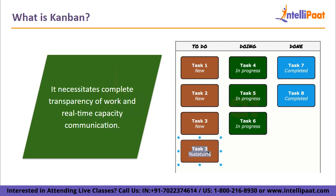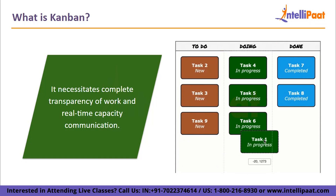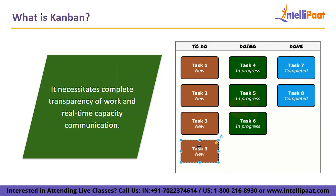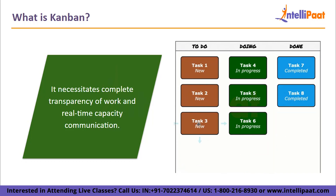The Product Owner is free to reprioritize work in the backlog without disturbing the team. The development team knows they are giving the business the greatest value possible as long as the Product Owner keeps the most crucial tasks at the top of the backlog. Therefore, the fixed-length iterations found in Scrum are not necessary. The individual differentiation is not always necessary when deciding between Kanban and Scrum because the two methodologies can coexist.